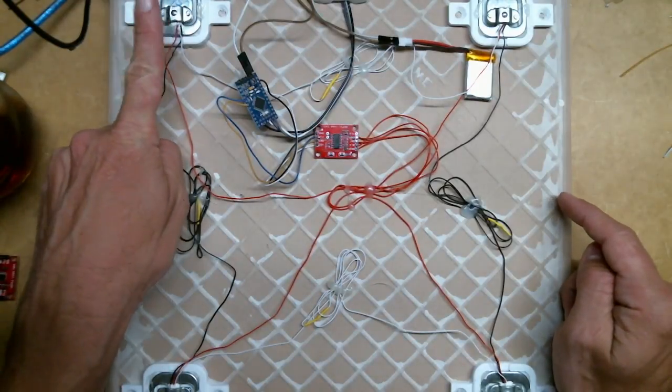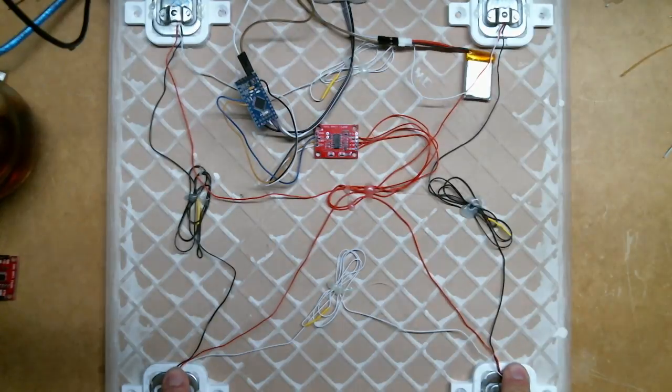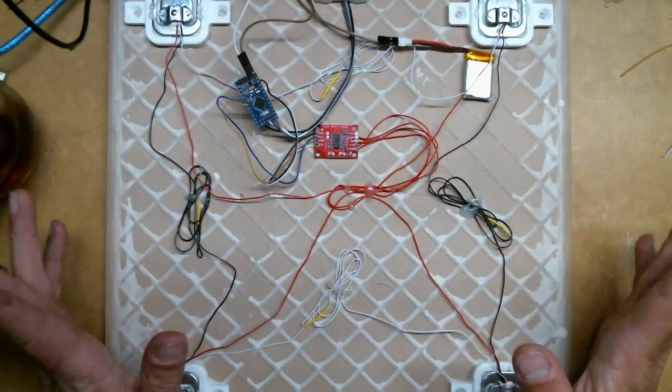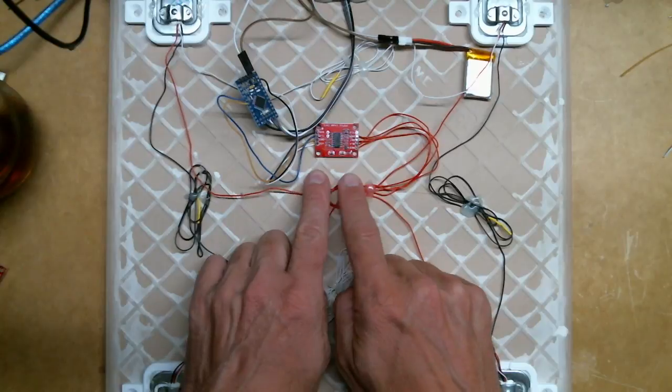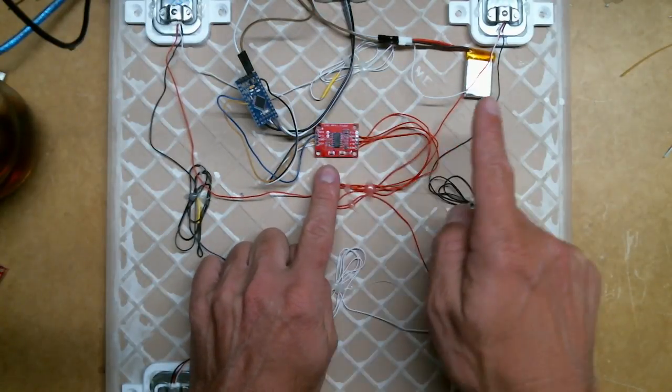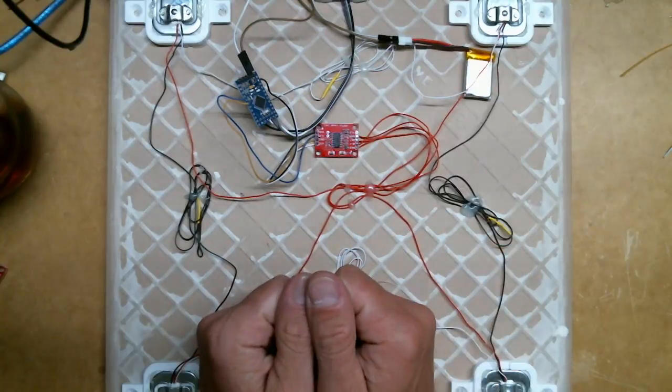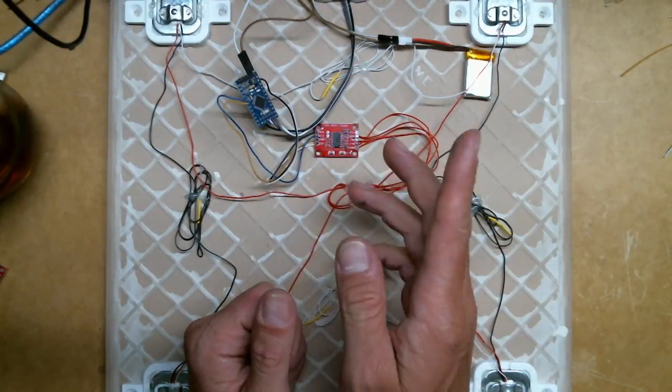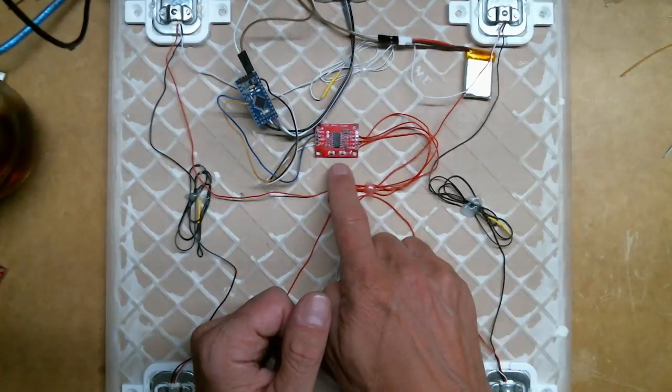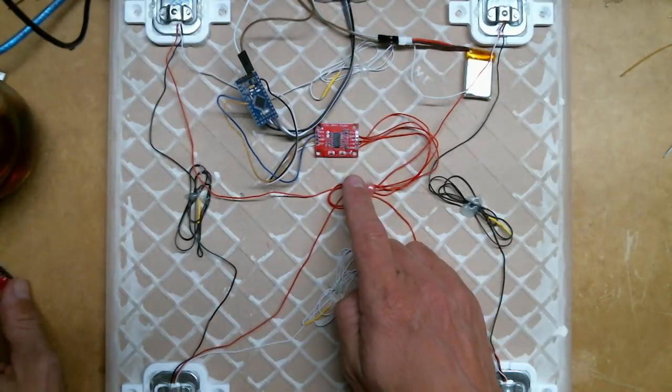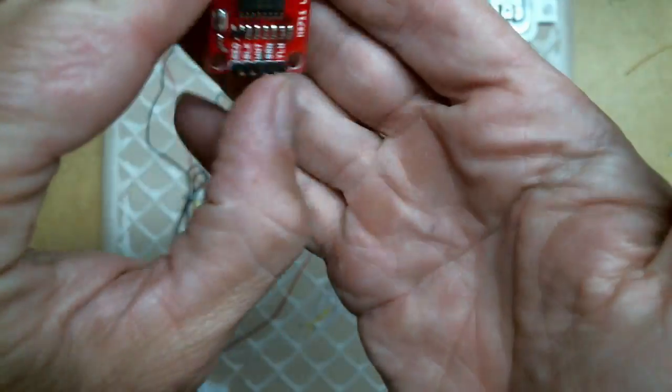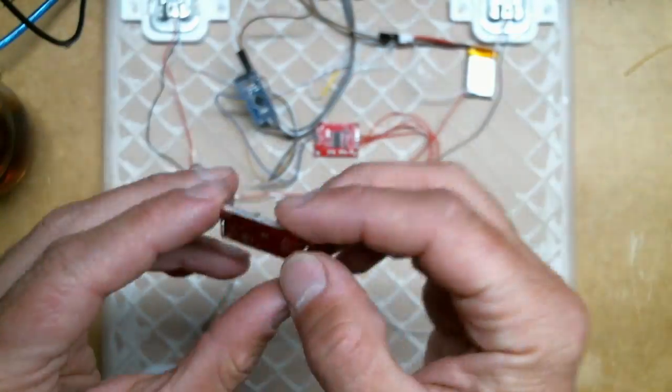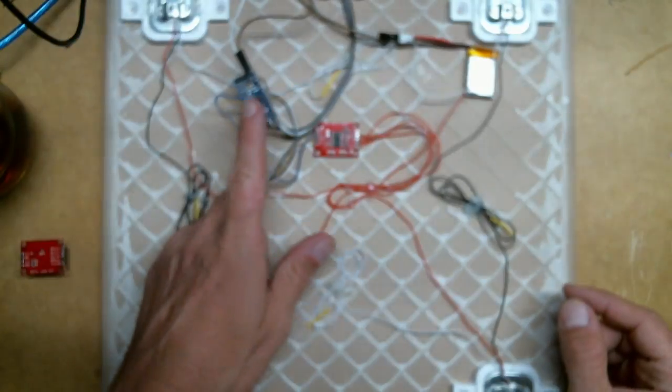The load cells were about a dollar something each. You need to run the load cells through an amplifier because the voltage change as they flex is so tiny that the Arduino can't deal with it. It would be an inaccurate mess. It's inaccurate already even with this thing, but it's livable. This is an HX711 amplifier. If you search for HX711, you'll come up with it. Again, a $2 item that goes to an Arduino Pro.